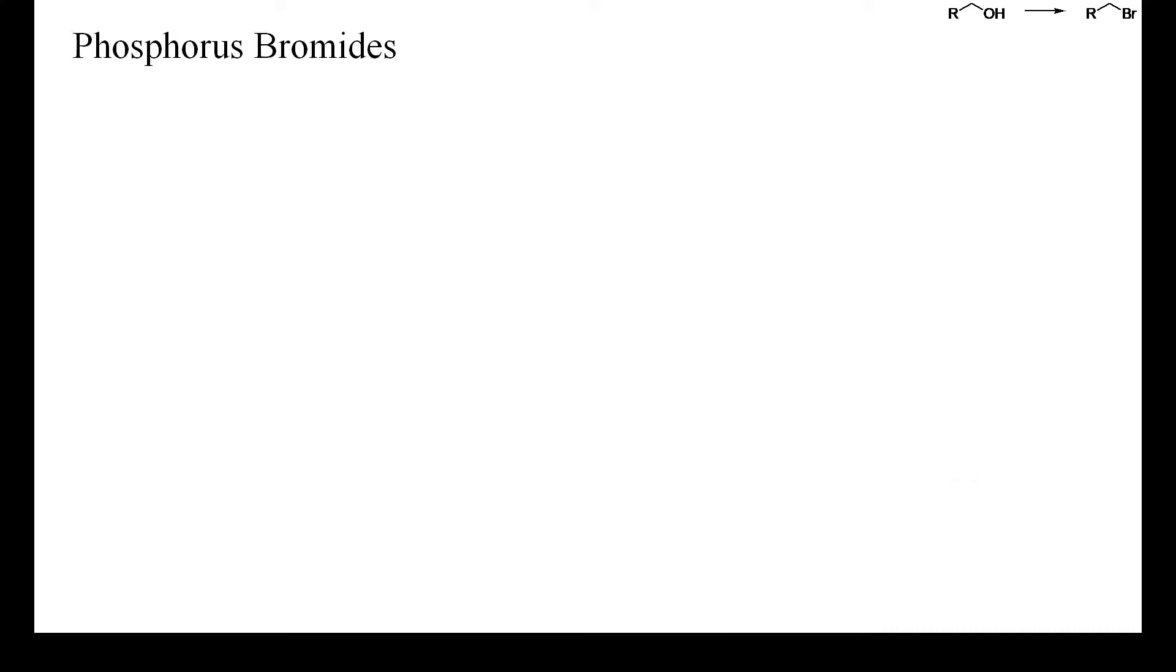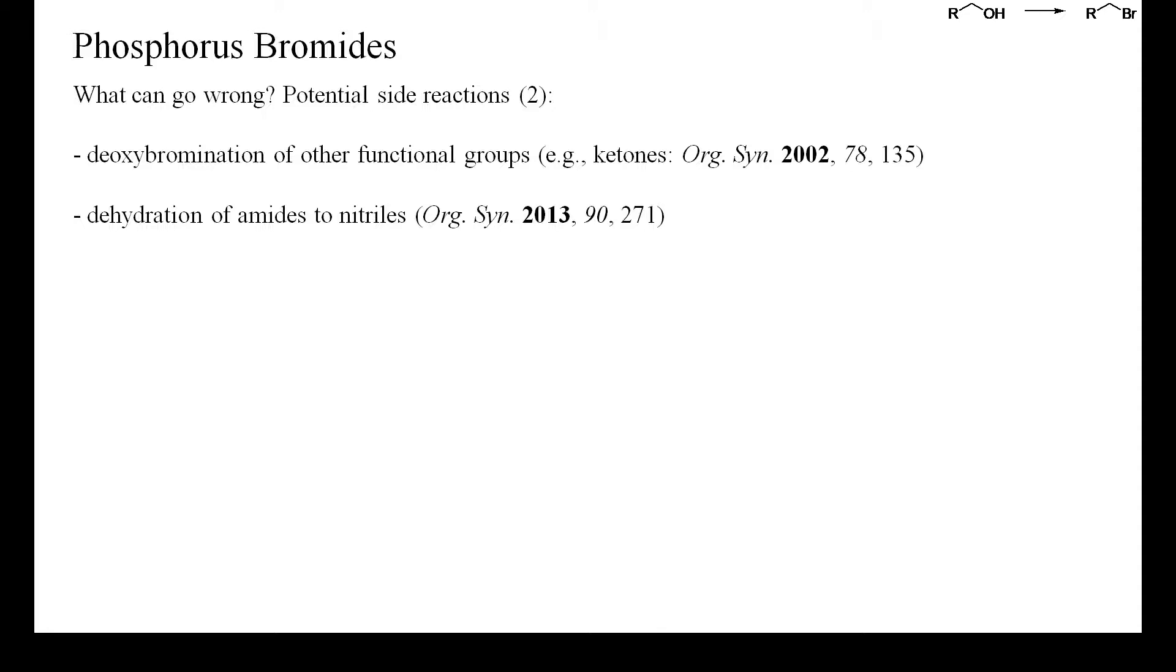Then other functional groups than alcohols can also react with phosphorus bromides. Ketones for instance can be converted into vinyl bromides and amides into iminium bromides or nitriles. Both phosphorus pentabromide and pentachloride can also dealkylate amides to yield nitriles and alkyl halides.